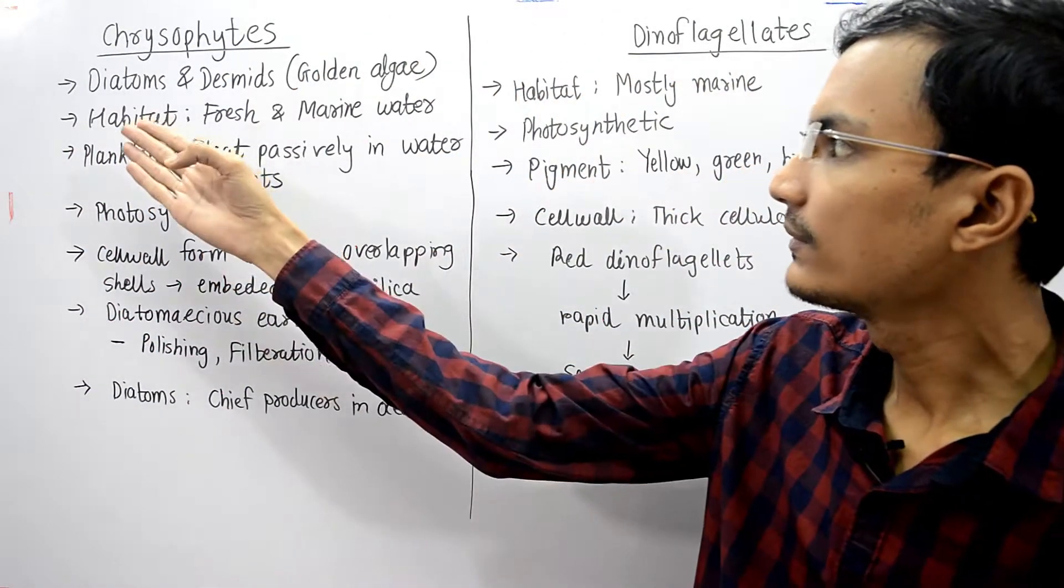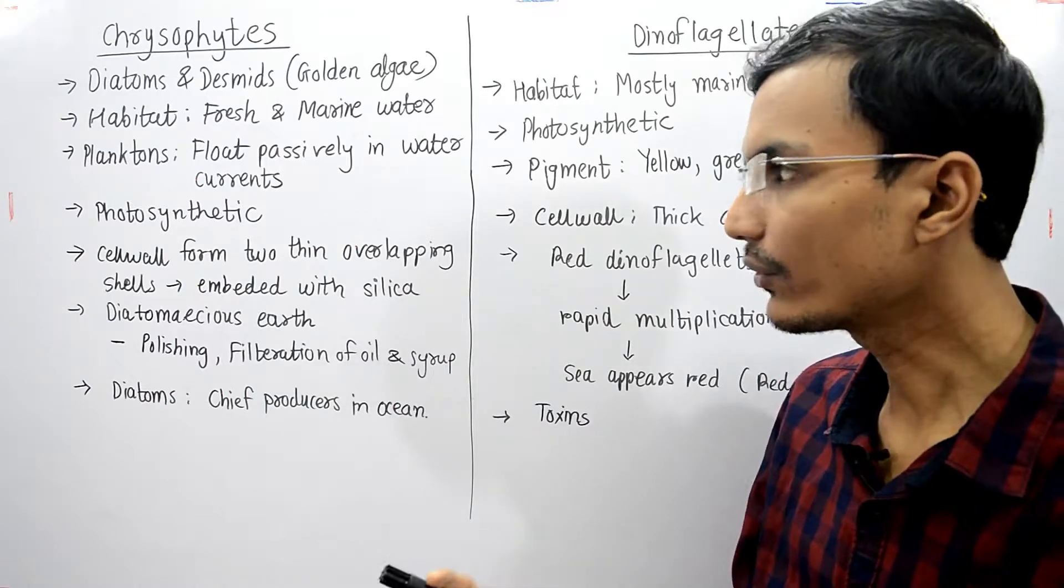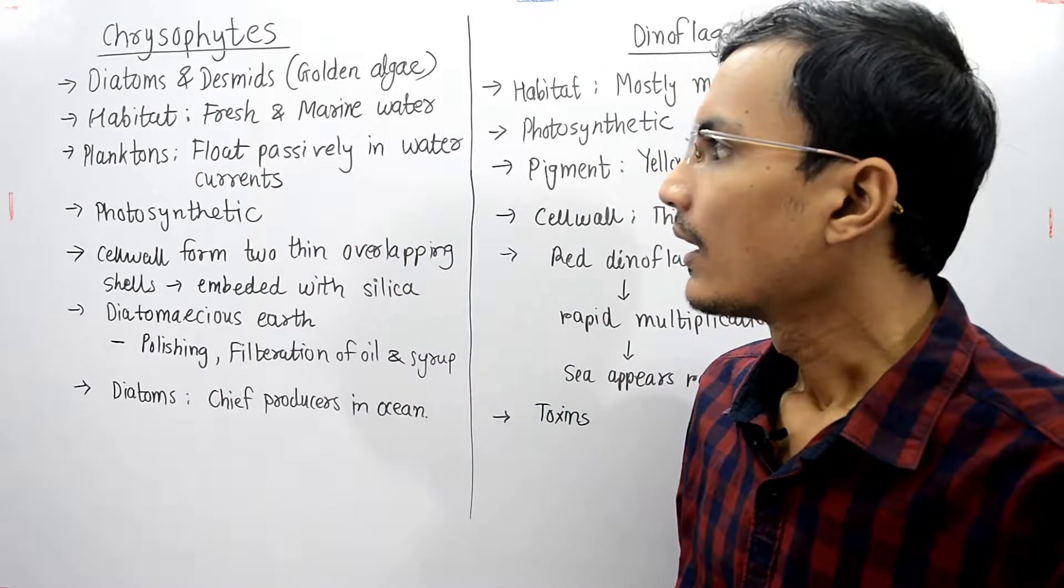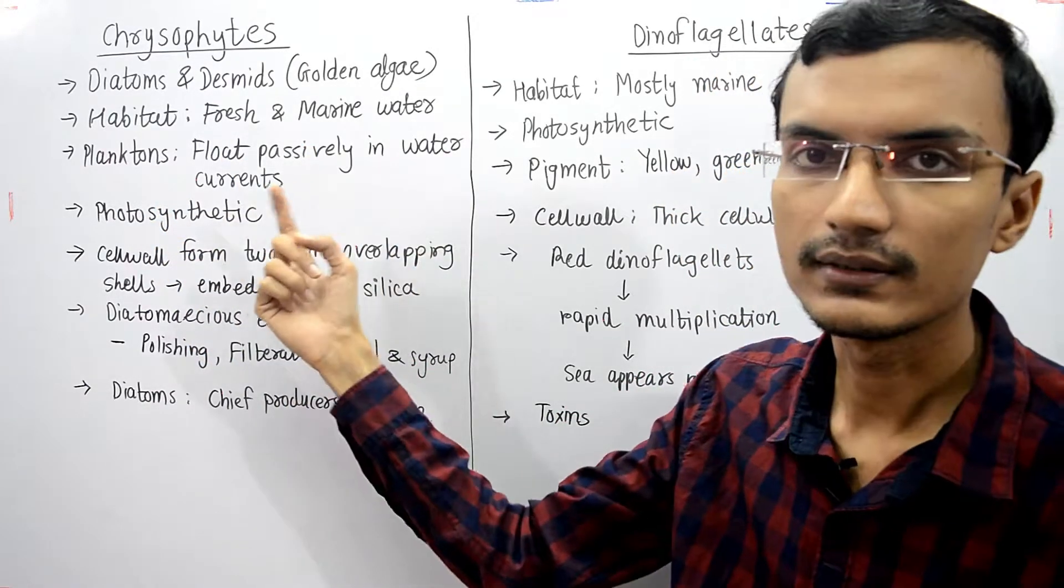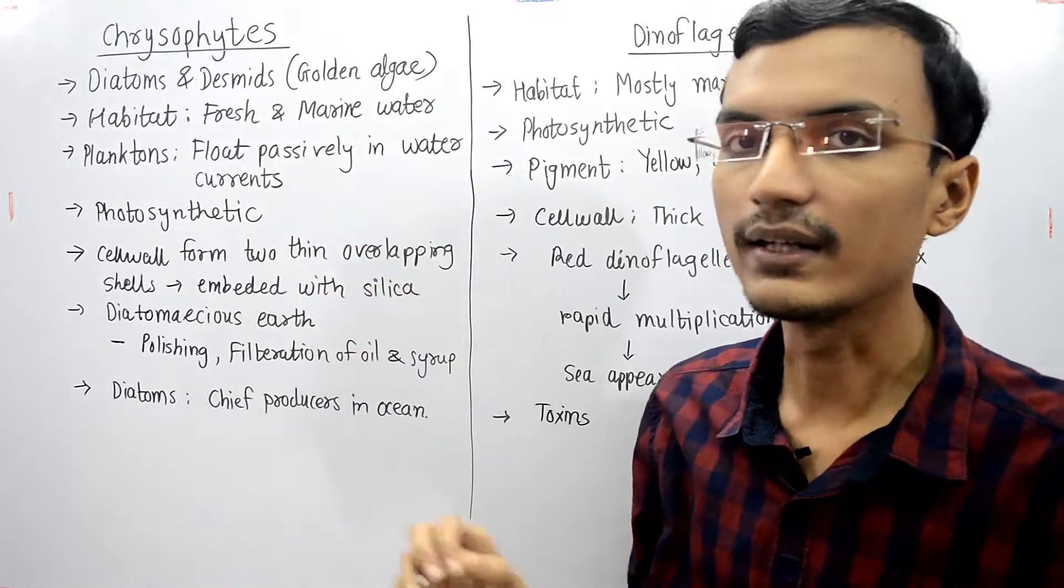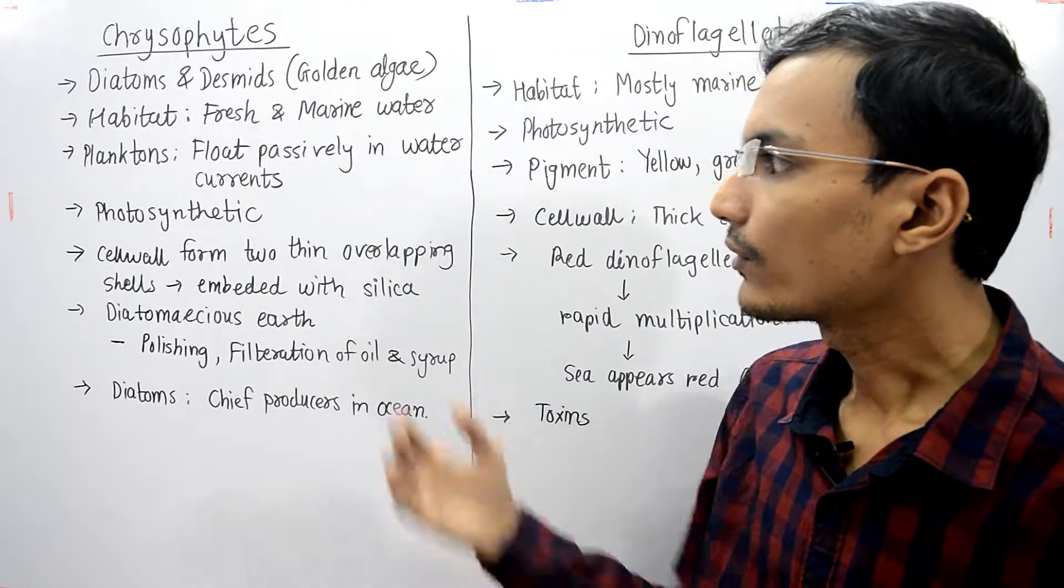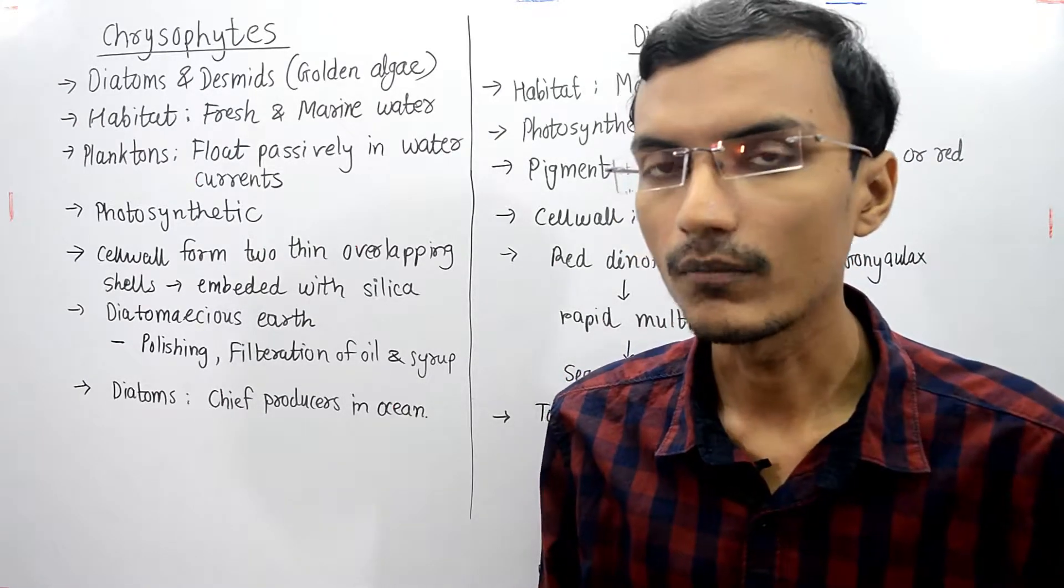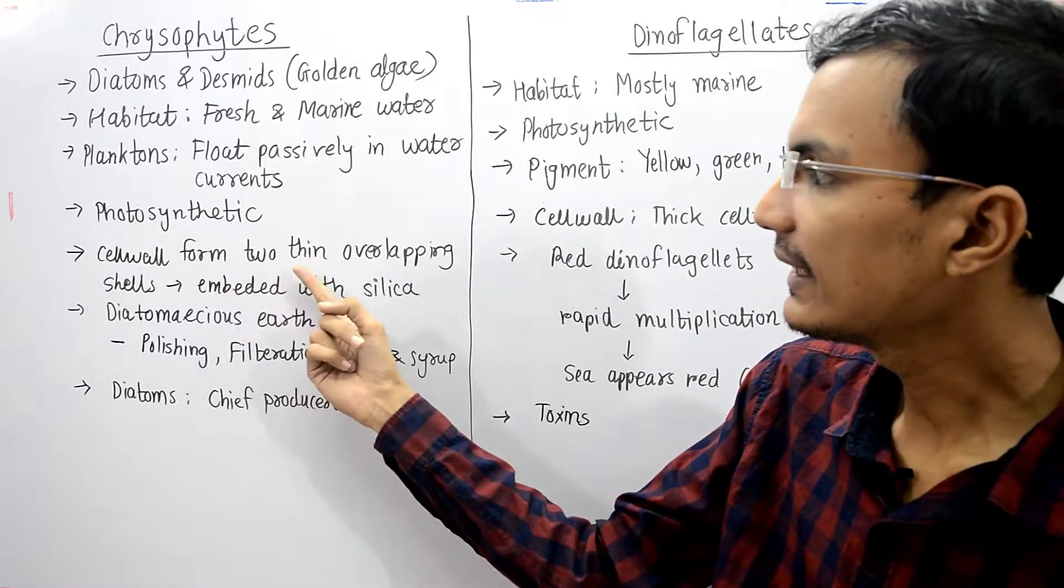Chrysophytes contain diatoms and desmids, also known as golden algae. Their habitat is fresh and marine water. They are called planktons, organisms which float passively in water currents without using energy. They are photosynthetic, containing chlorophyll and doing photosynthesis, so they have an autotrophic mode of nutrition.